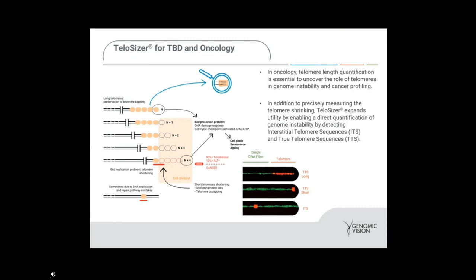Telosizer is a critical application used for TBD and in oncology. We use our Telosizer application to study the TTA-GGG repeat units found at the ends of telomeres. Our technology is particularly applicable to that region because other methods that rely on PCR would become hindered by that constant repeat element. Because molecular combing in principle does not get impacted by those repeat elements, we get a resolution that is not always possible by other applications such as next-generation sequencing, real-time PCR, QFISH, or FlowFISH.